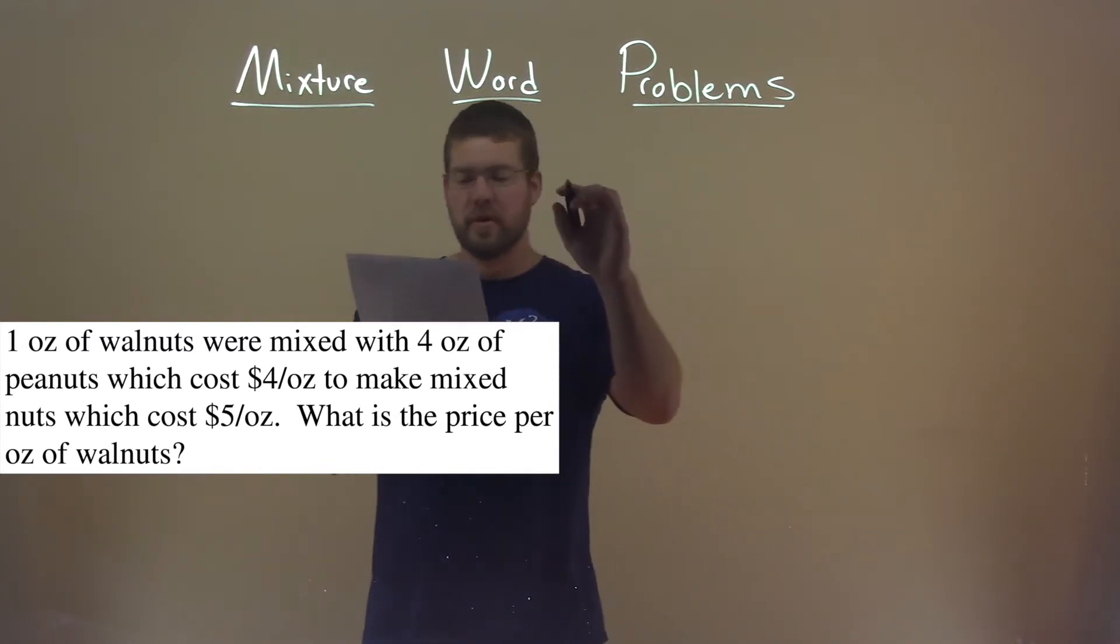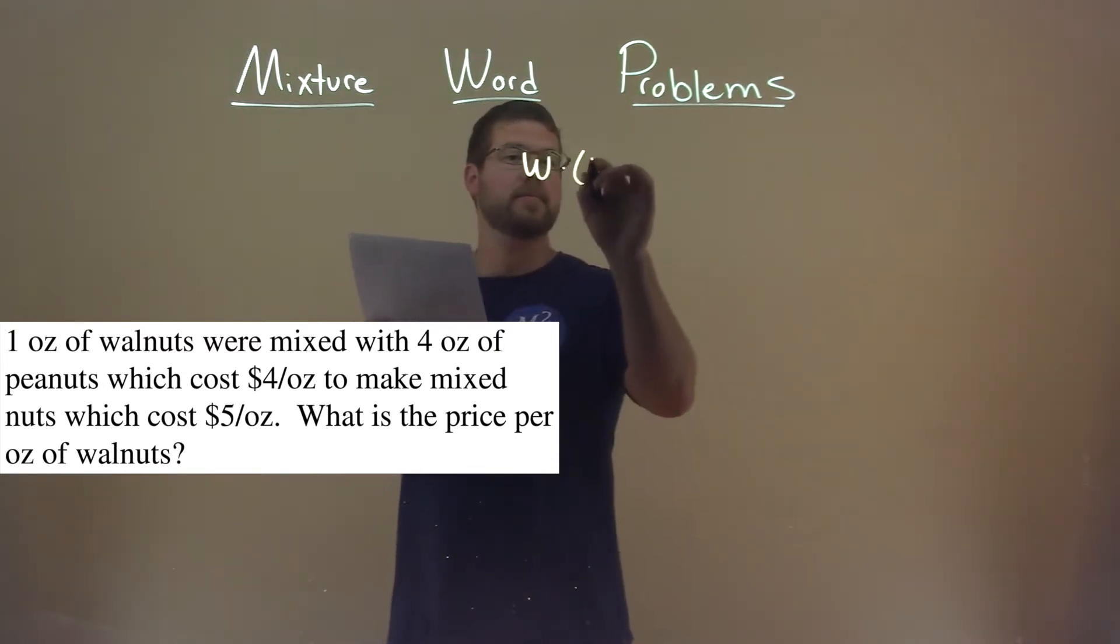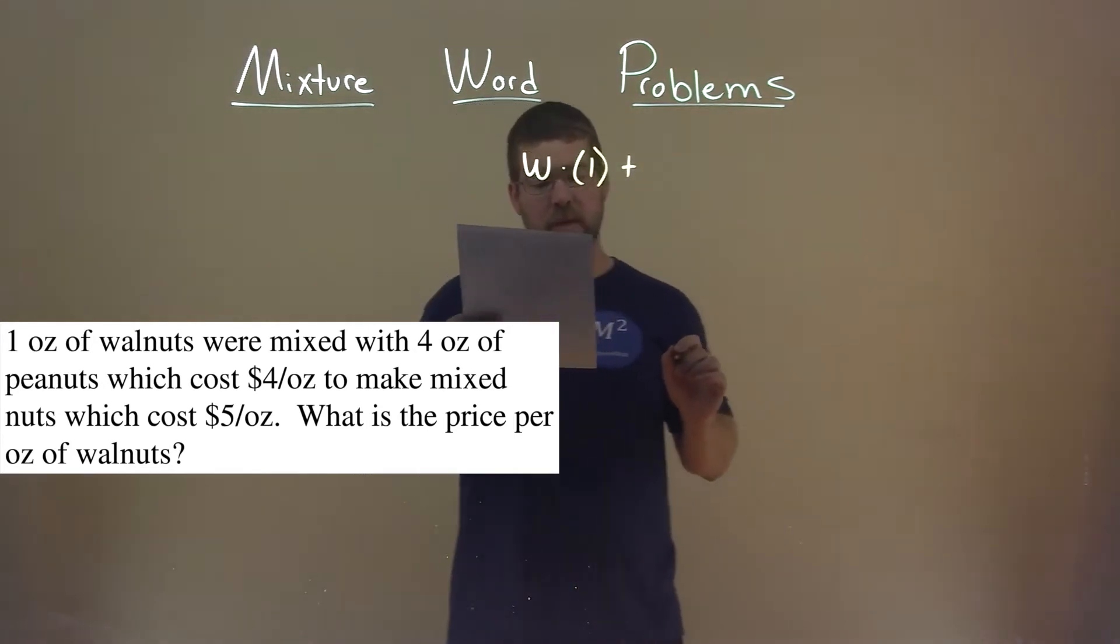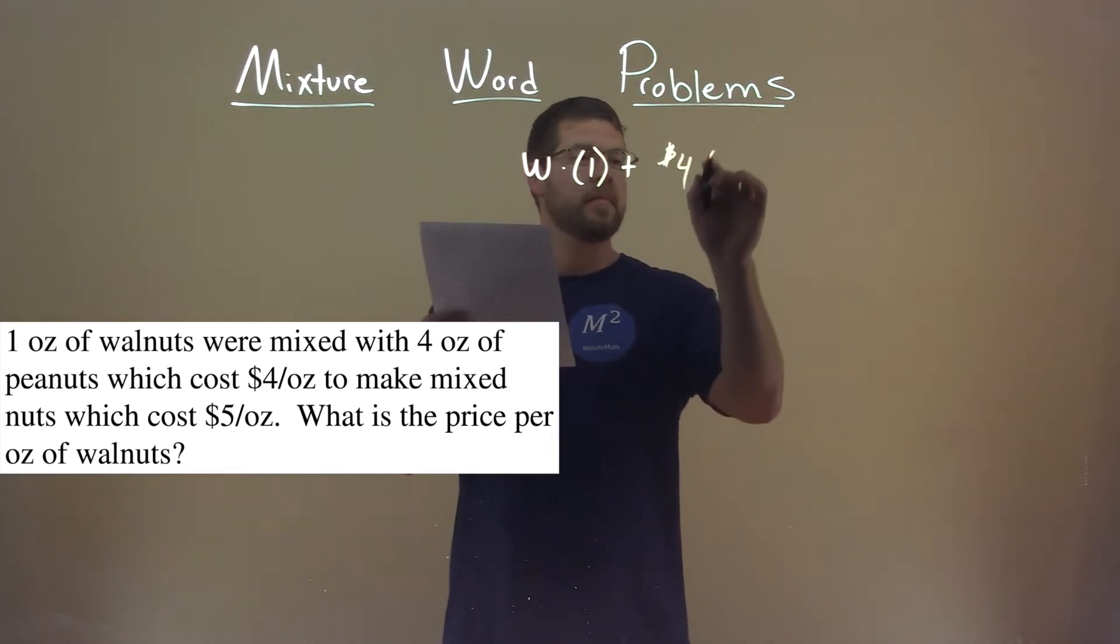All right, so we don't know the price per ounce of walnuts. Let's call that W here. But we know we have one ounce of them. We know the price of the peanuts per ounce is $4, and we have four ounces of peanuts.